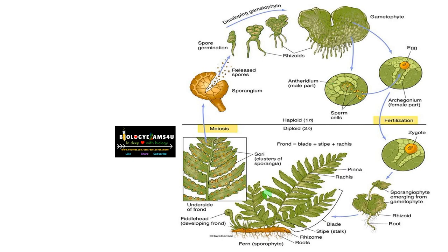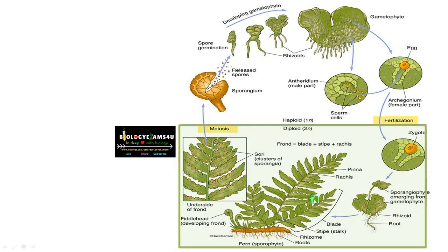In ferns there are two distinct phases: the sporophytic phase and the gametophytic phase, and one comes after the other. Sporophyte gives rise to gametophyte, and gametophyte forms the sporophyte again. This type of life cycle is called alternation of generation — alternation between the sporophytic phase and the gametophytic phase.